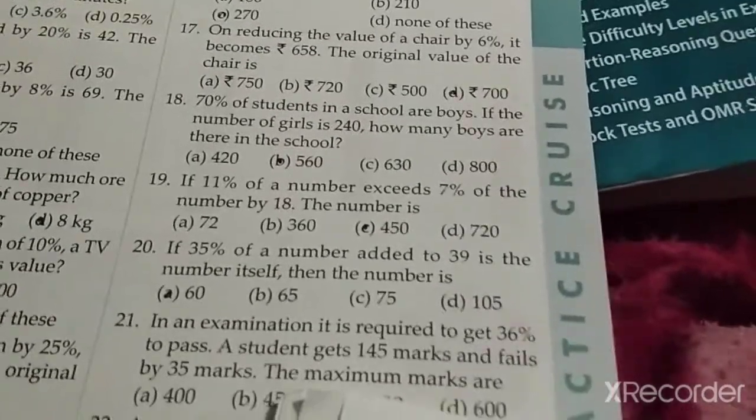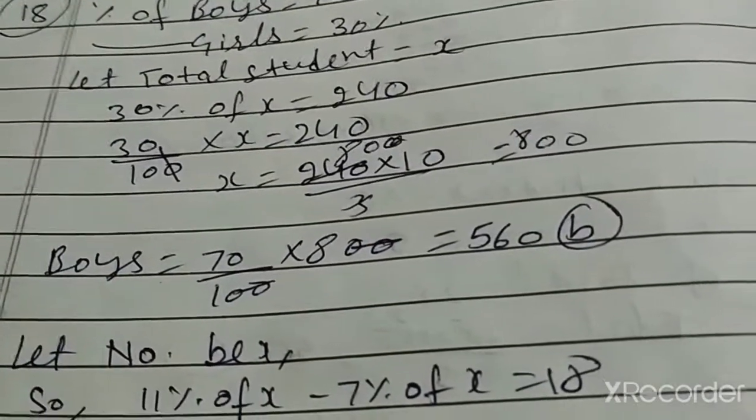Question number 18: one school me 70% boys aur 240 girls. 70% boys means girls are 30%, so 30% equals 240 girls. Total students are 800. Boys are 800 minus 70% of 800.